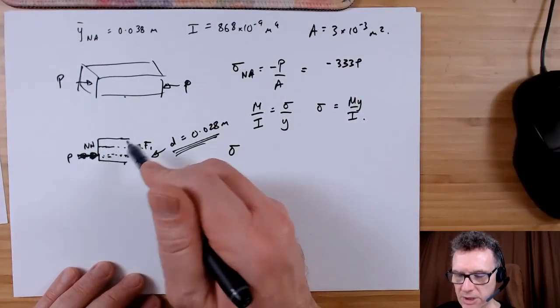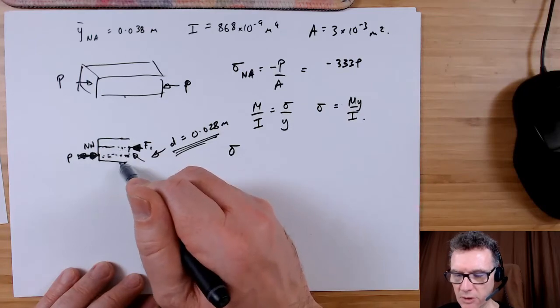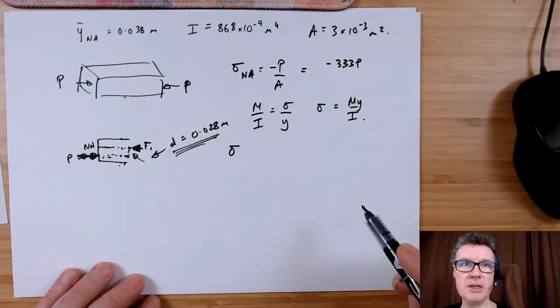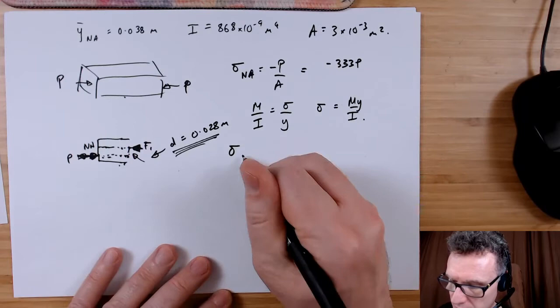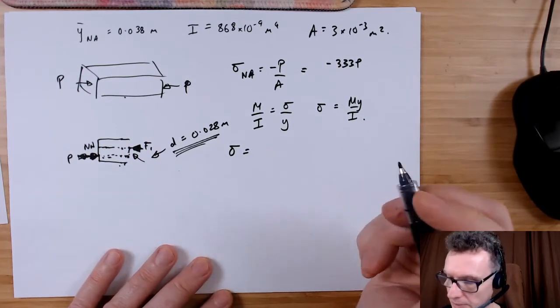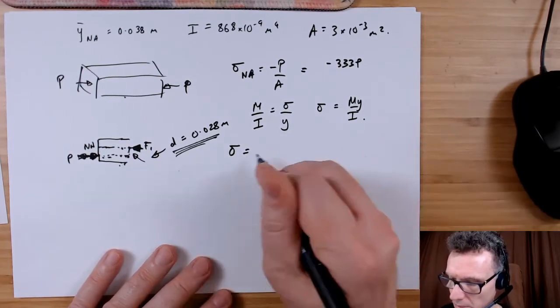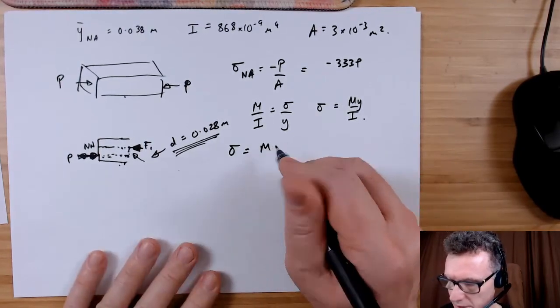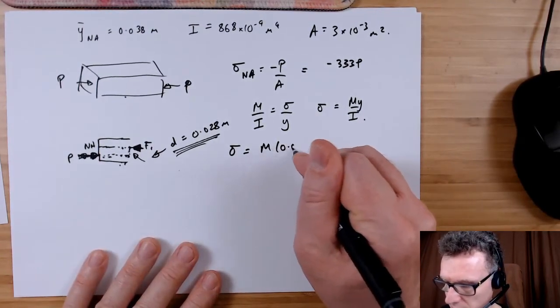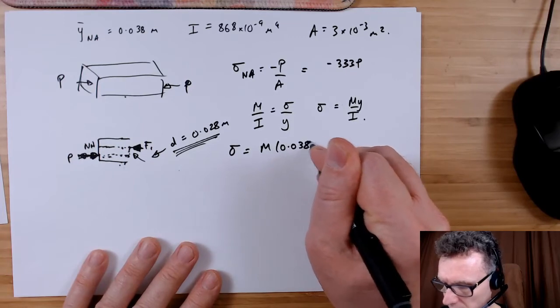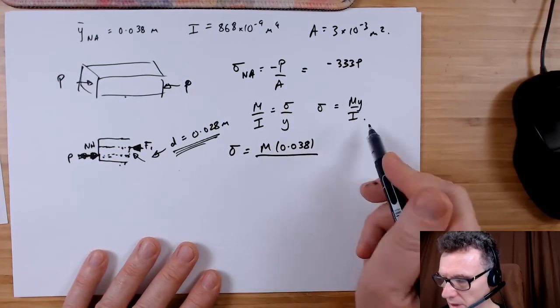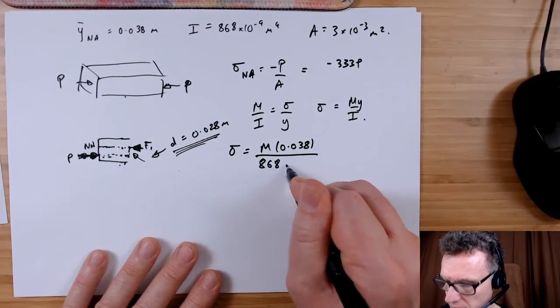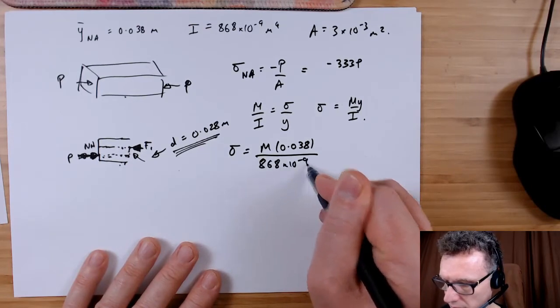To get to the bottom bit from the neutral axis, that's 38, so that will be M. I know the y to get to the bottom is 0.038 and I know the I, 868 times 10 to the minus 9.